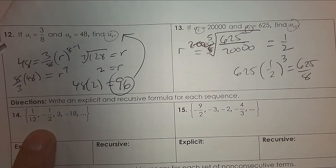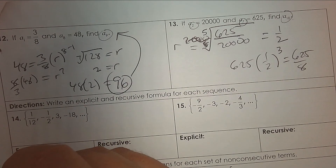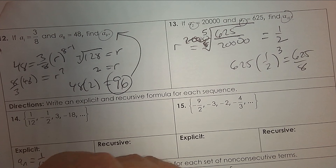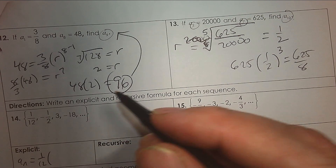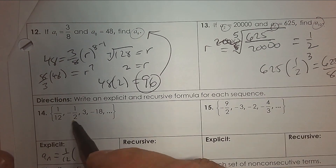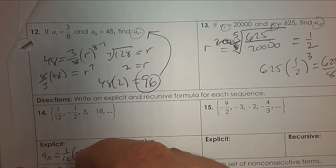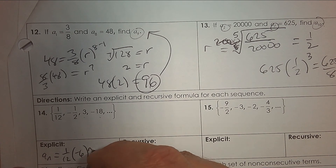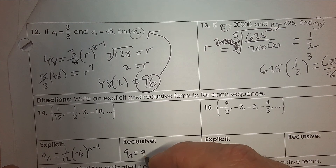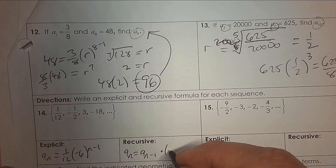Write an explicit and recursive formula for each. The explicit one is super simple — it's 1 twelfth and then the ratio. Divide two consecutive numbers: negative 18 divided by 3 gives negative 6. So the explicit is: first term to negative 6 to the n minus 1. The recursive says: take the one before and multiply it by negative 6.